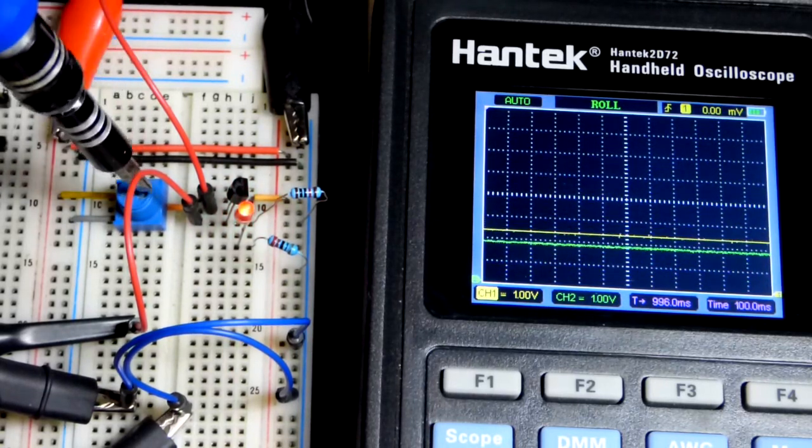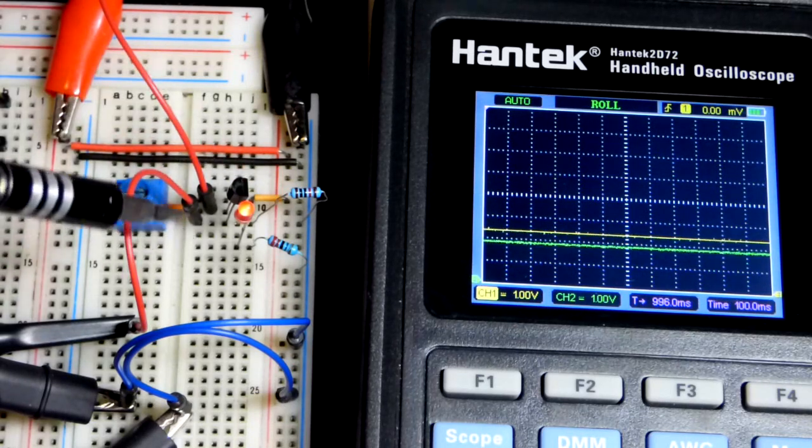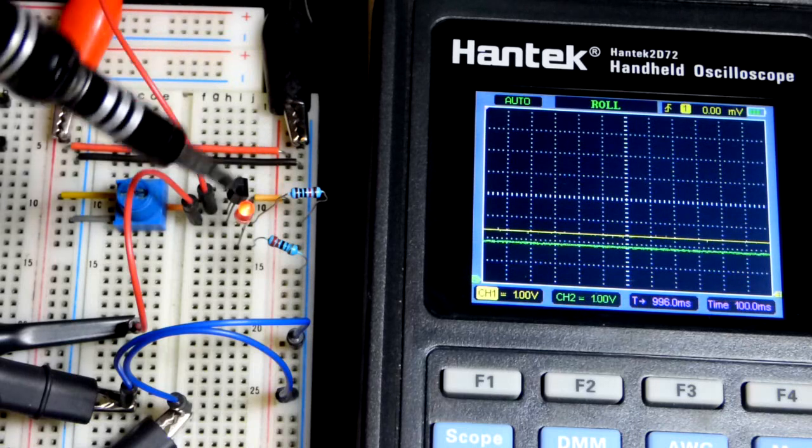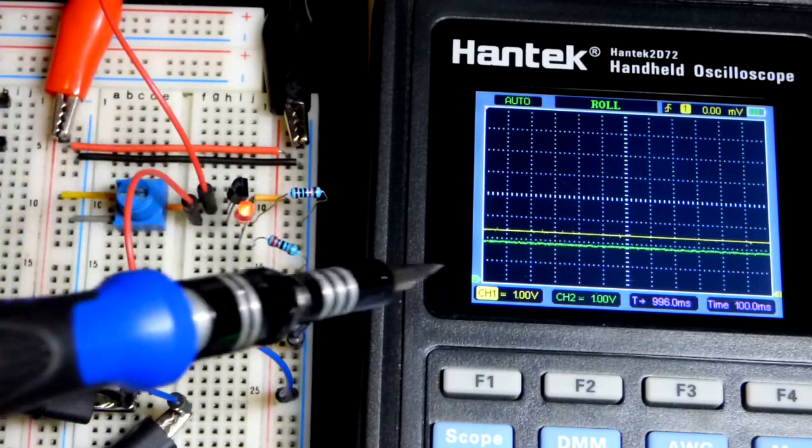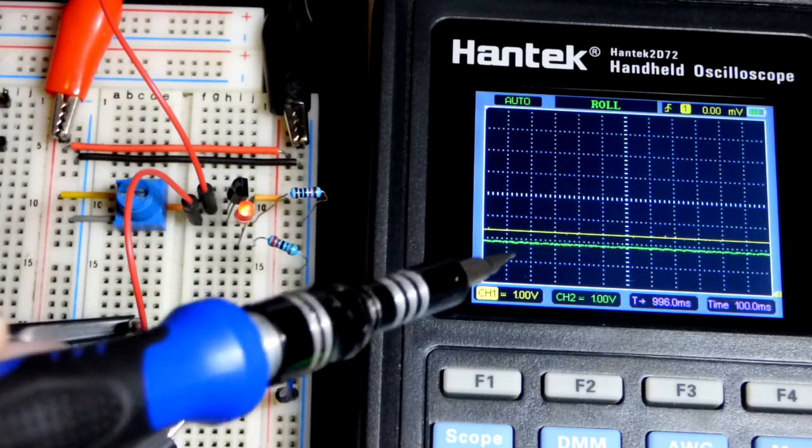In any case, the signal from the trim pot goes to the base of the transistor. That's the measurement we're taking. It transfers to the emitter, but that signal can't provide the power. It'll get thrown off.